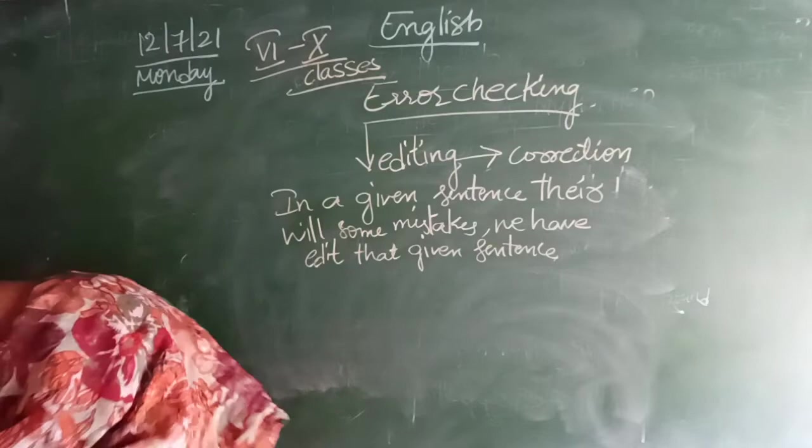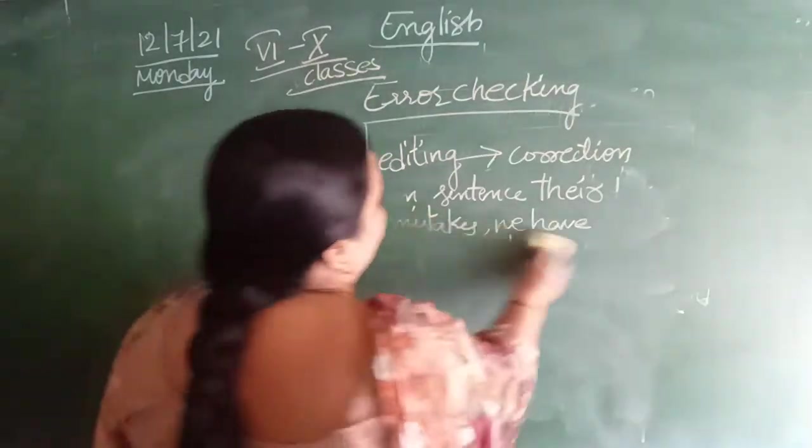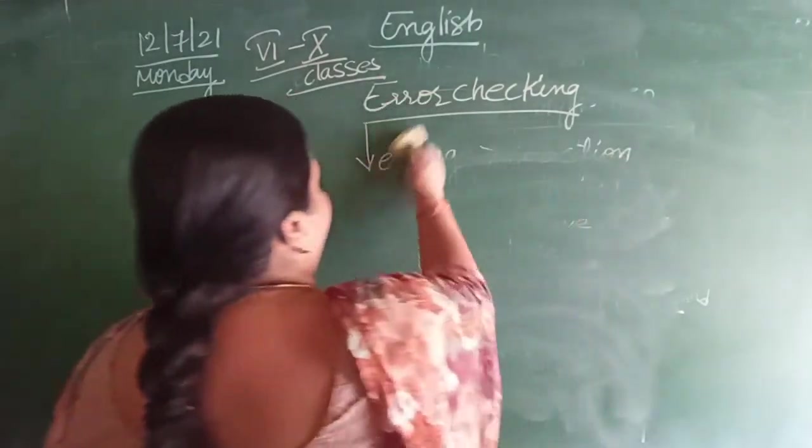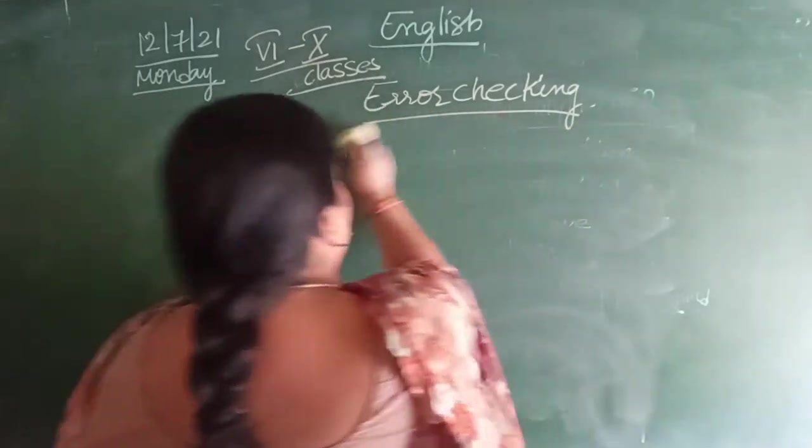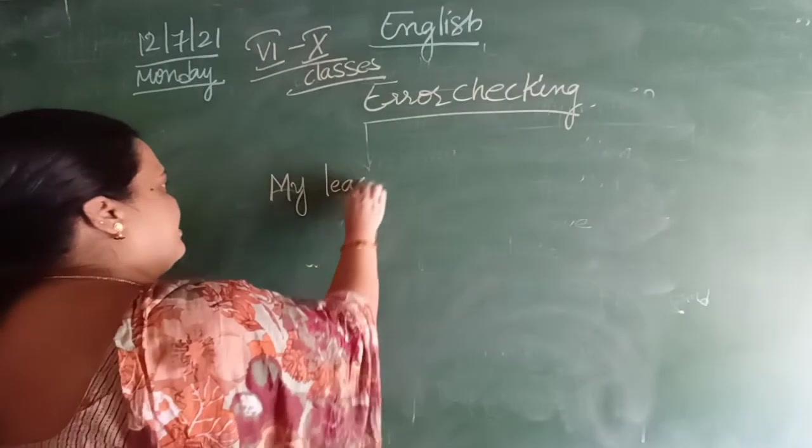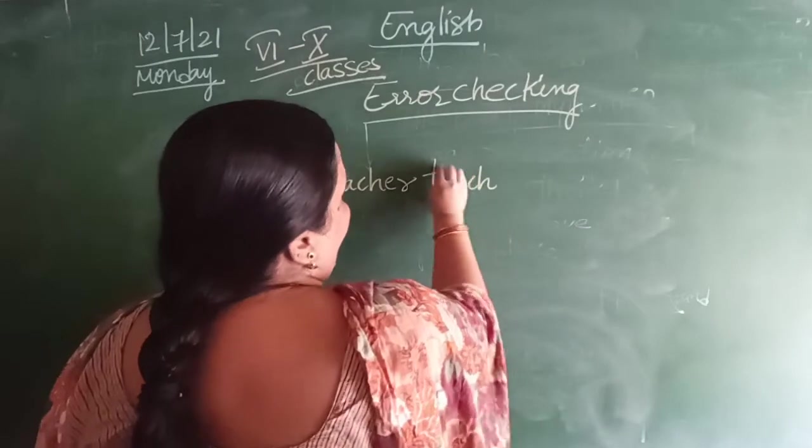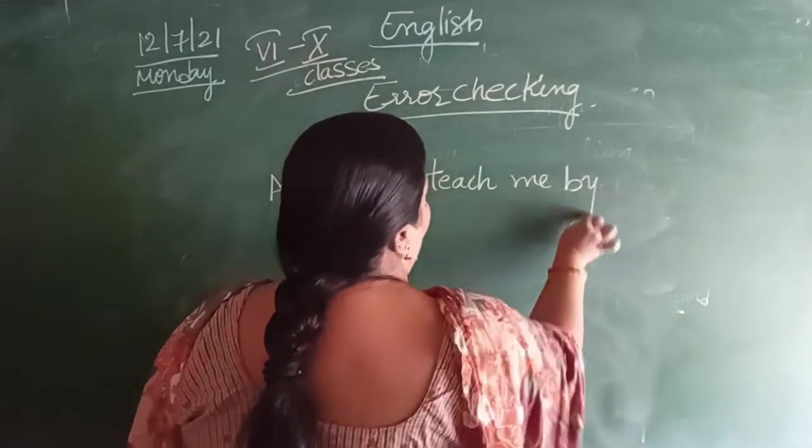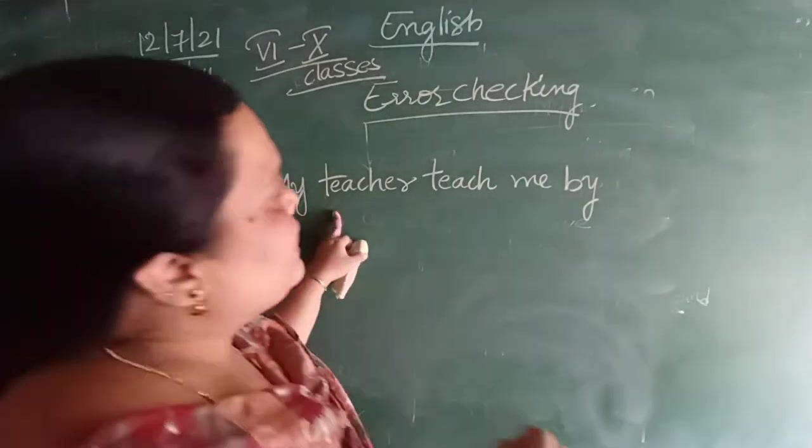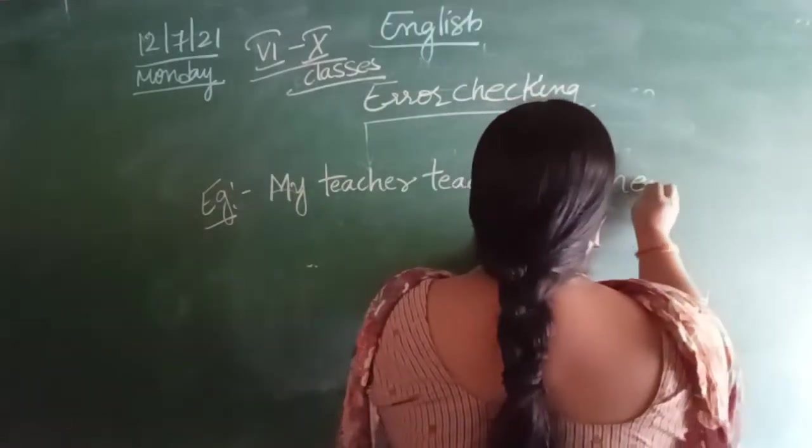Now let us identify just with an example. I am writing a small example children. We are not going into depth now. Just to see a sentence. This is my teacher. My teacher teach me. My teacher teach me by heart. This is only an example I am mentioning here.